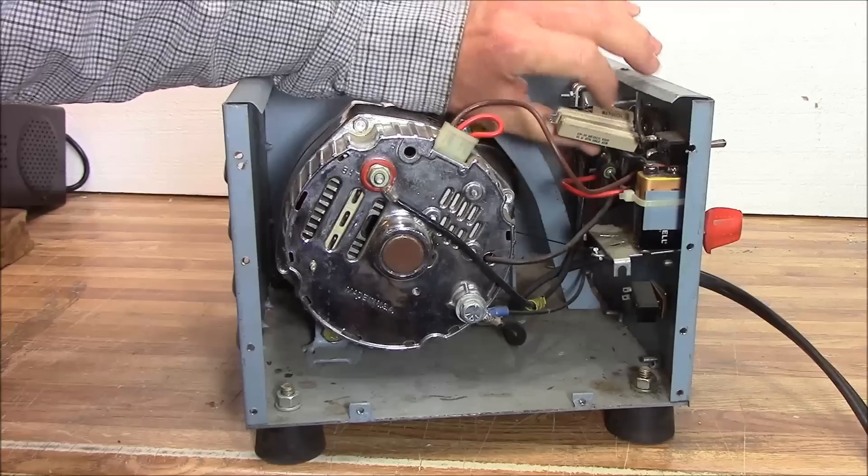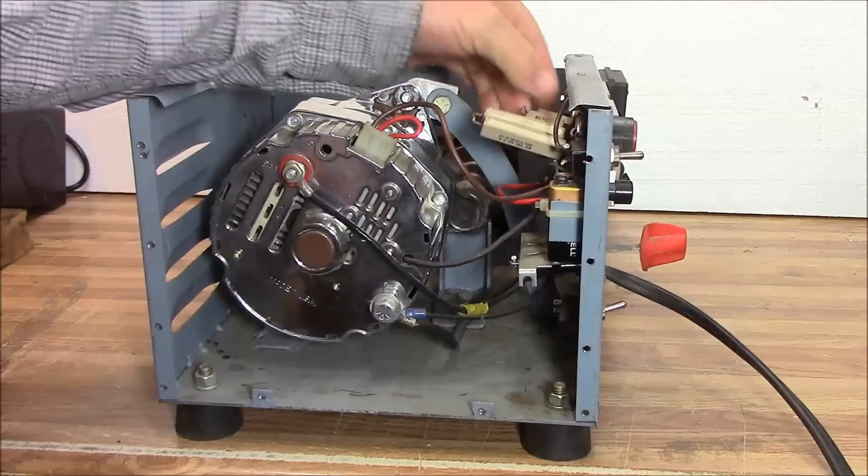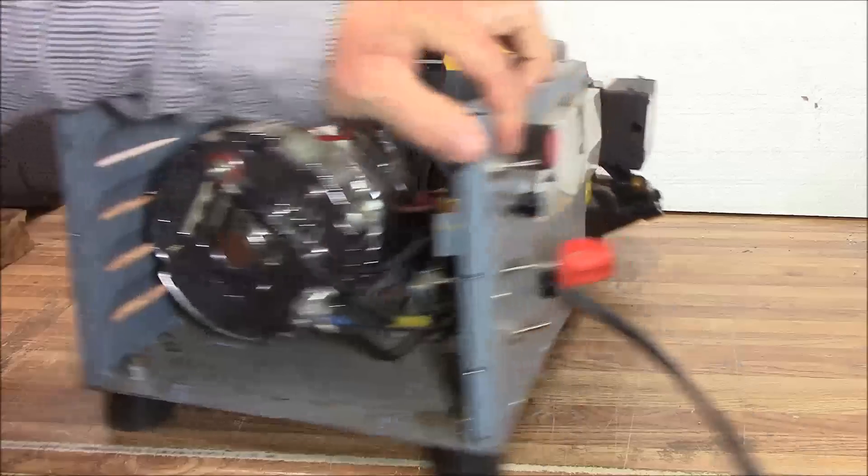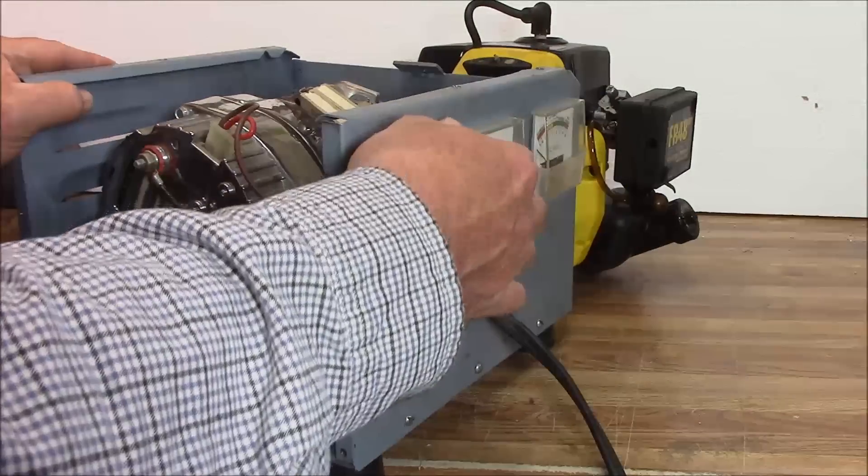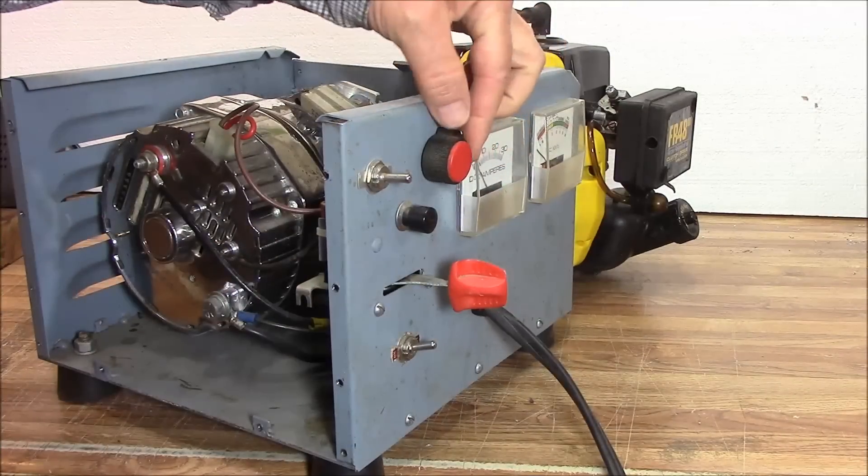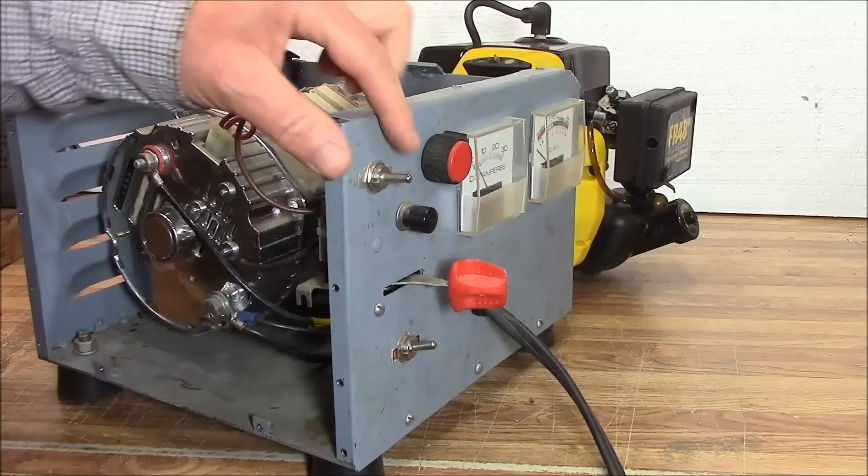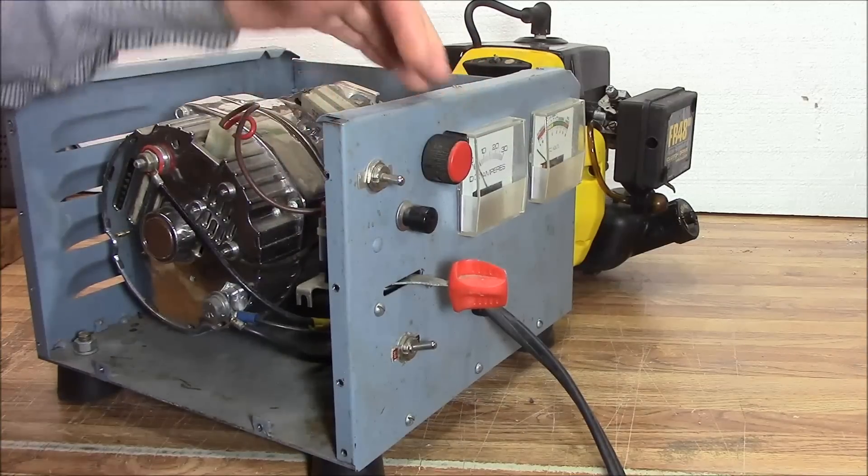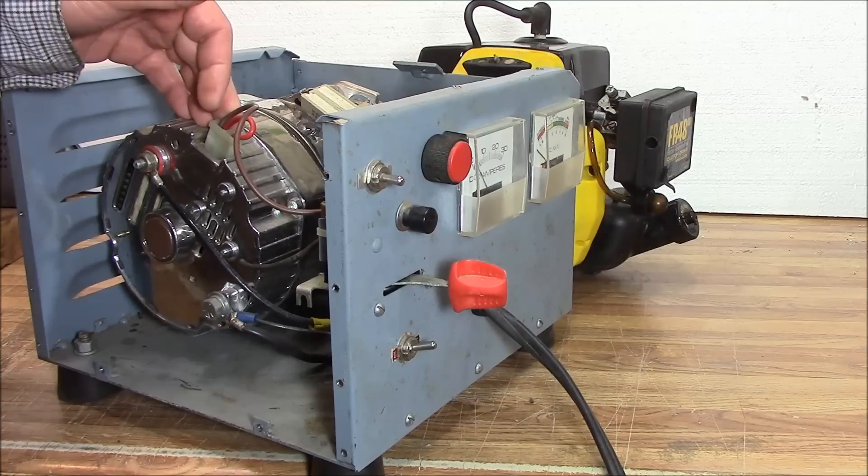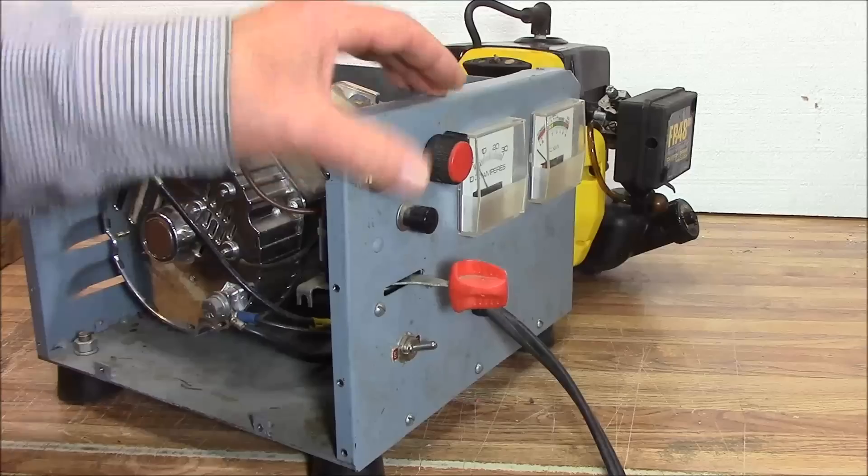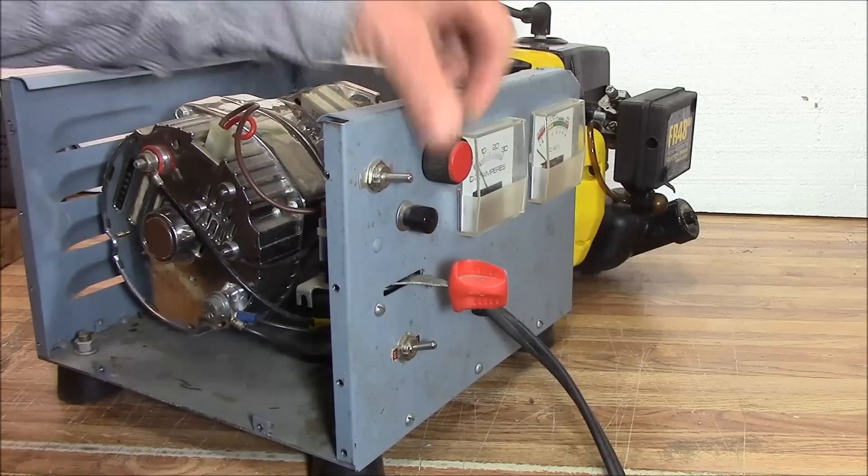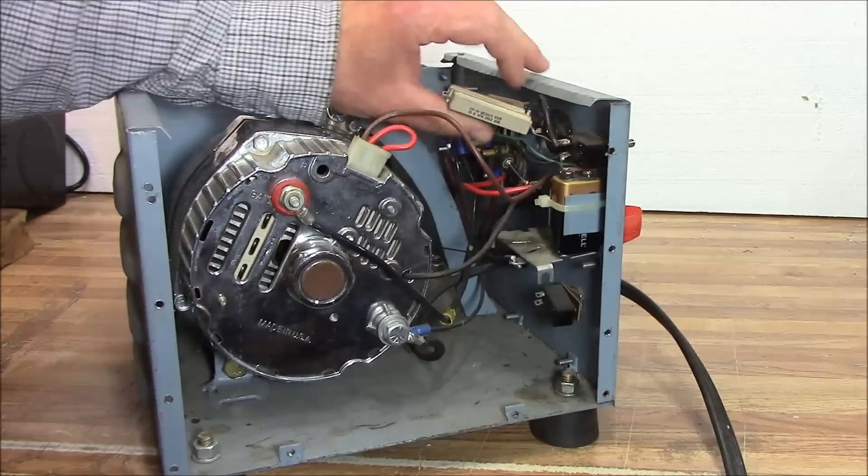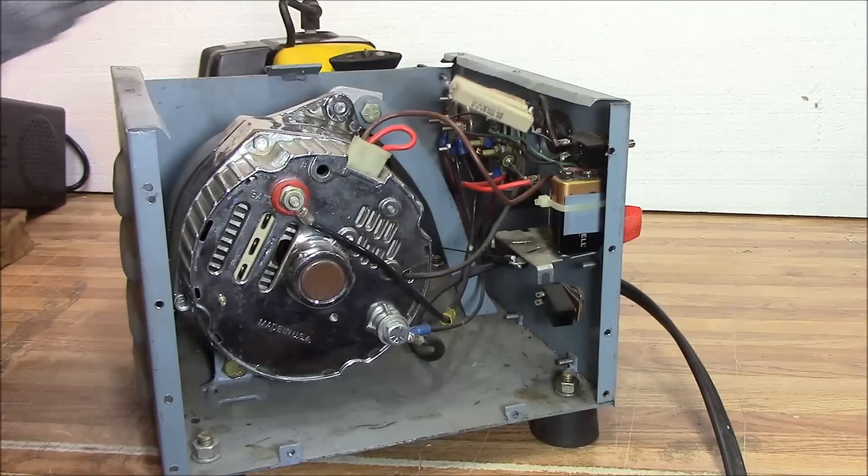These resistors are attached to this rheostat. This rheostat controls the alternator along with the voltage regulator. I can switch it from manual to automatic. If I go to automatic, it works off the internal voltage regulator inside the alternator. If I go to manual, it goes to this rheostat. My rheostat wasn't the right weight ratio, so I had to add some resistors in here.